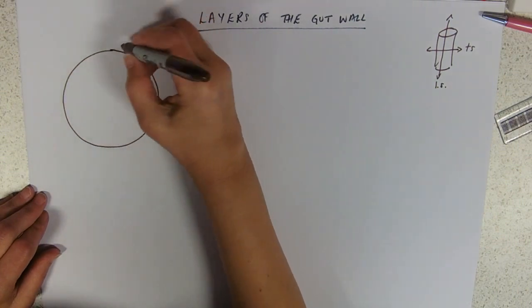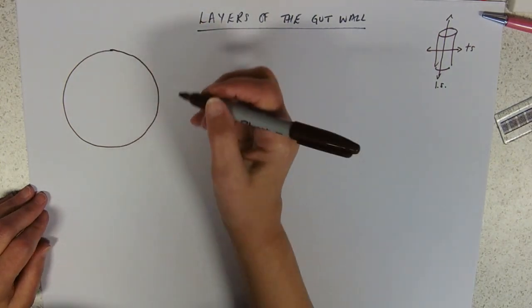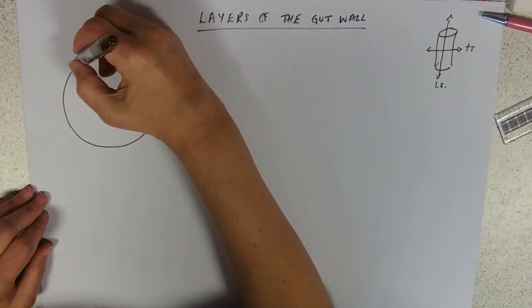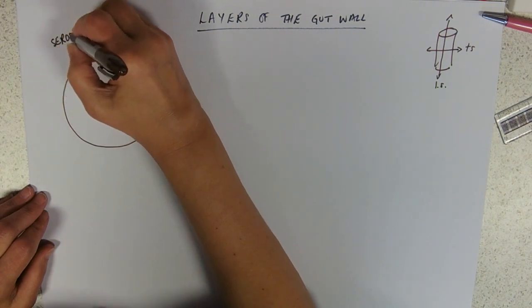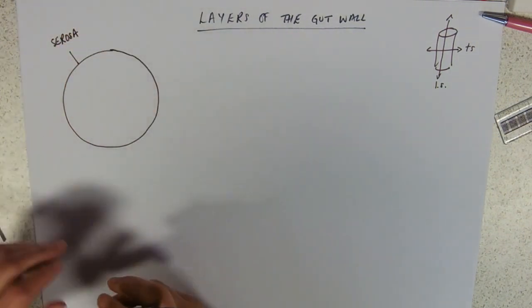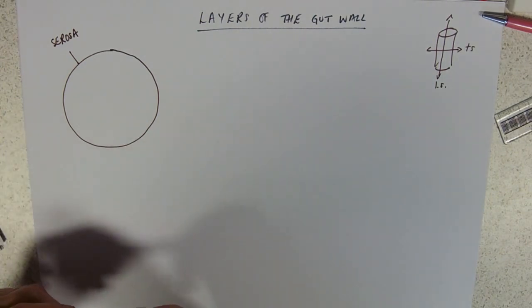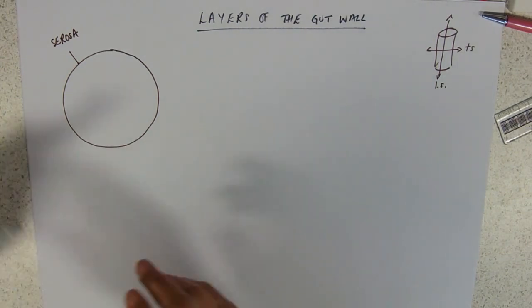It has a layer of pretty much connective tissue called the serosa around the outside. That just kind of keeps everything together as it were.